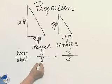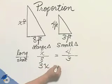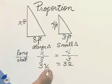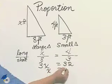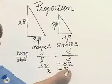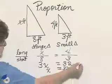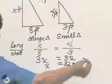Cross multiply, 3X equals 32. Divide by three, X is 32 thirds, or 10 and 2 thirds feet.